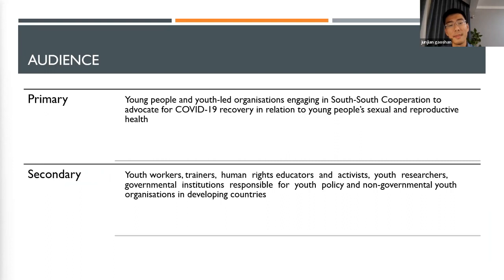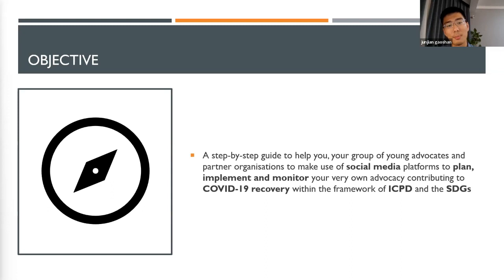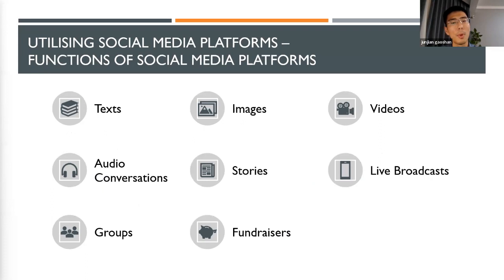We're also hoping that stakeholders around youth leaders and young activists can refer to this toolkit for information and knowledge — that includes youth workers, trainers, human rights educators, activists, youth researchers, and government officials. The objective of the toolkit is to provide a step-by-step guide to help you, your group, and partner organizations make use of social media platforms to plan, implement, and monitor your own advocacy contributing to COVID-19 recovery within the framework of ICPD and SDG.